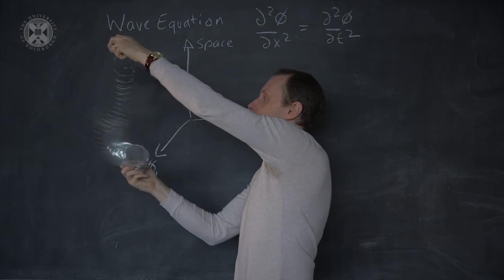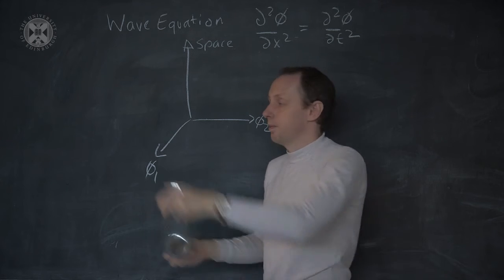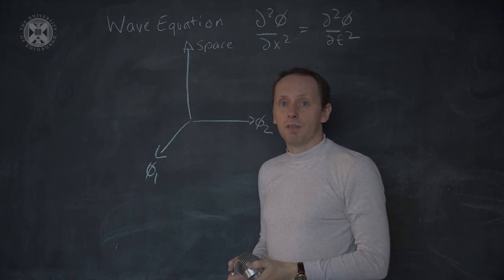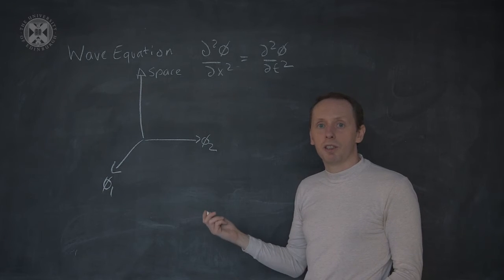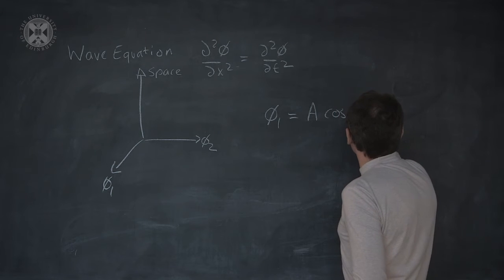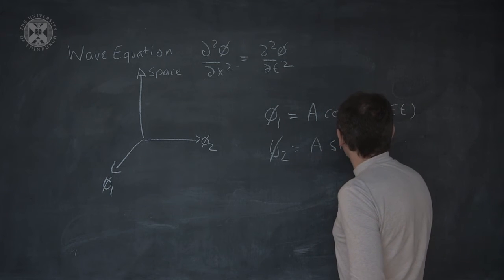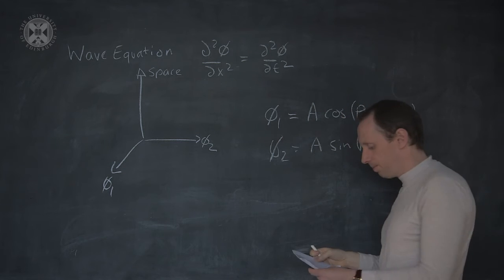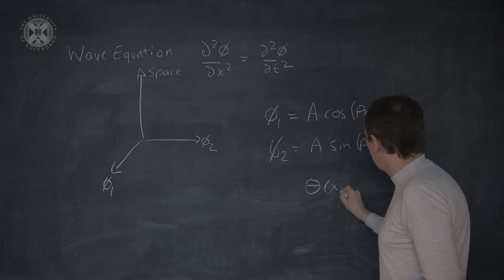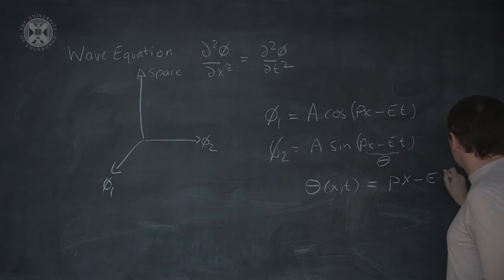Of course, both directions can oscillate at the same time. Either clockwise, which we identify with particle modes, or anti-clockwise, which we identify with anti-particles. The amplitudes of these modes are quantized. You can write down the particle solutions. Phi 1 equals A cos px minus et, and phi 2 equals A sin px minus et. And we can think of these as being associated with a phase angle theta by x and t, which is equal to px minus et.